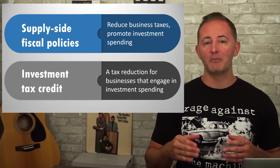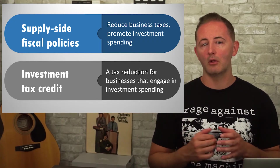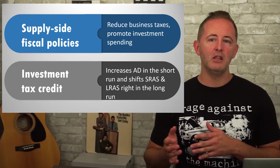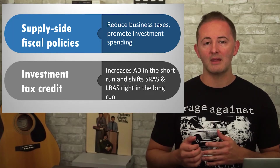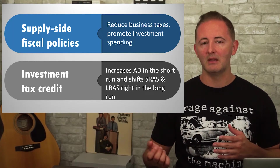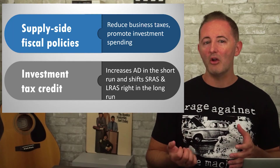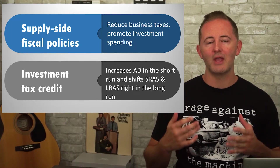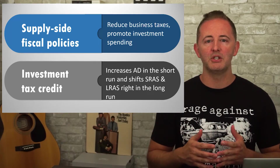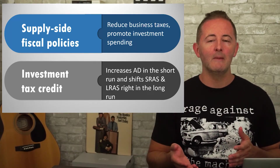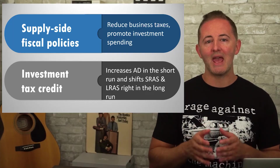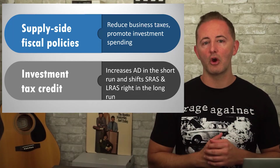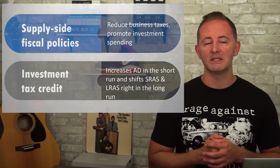These policies have both short and long-run effects. In the short run, the AD curve shifts to the right as firms engage in investment spending. In the long run, that investment spending has created new physical capital and technology, which increases productivity and shifts our AS curves to the right, indicating that economic growth has taken place.